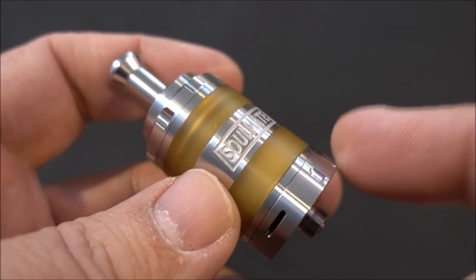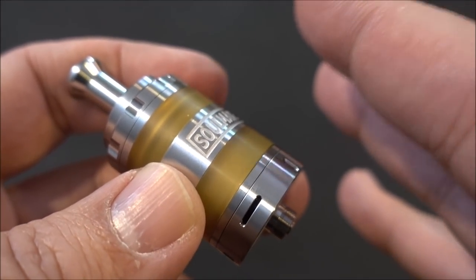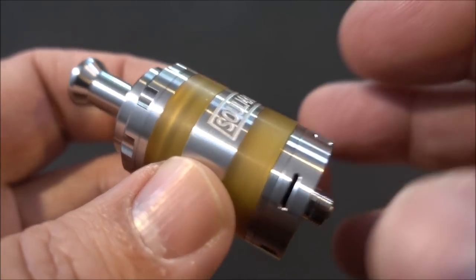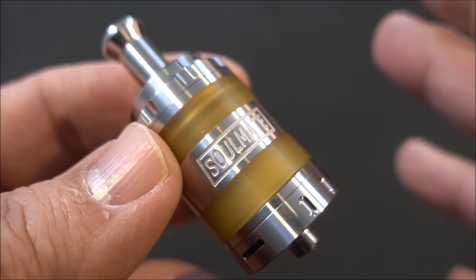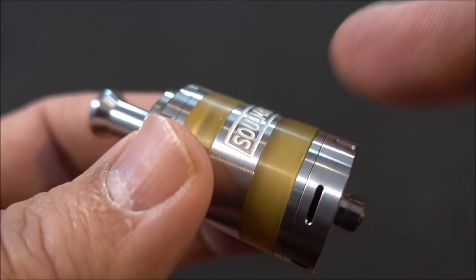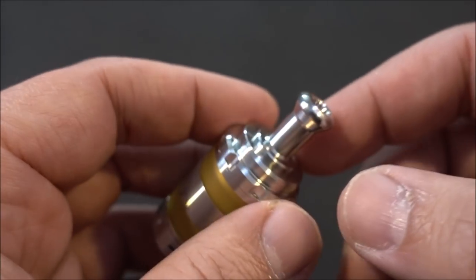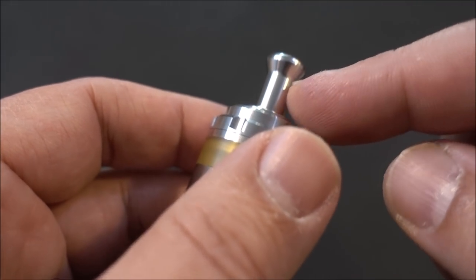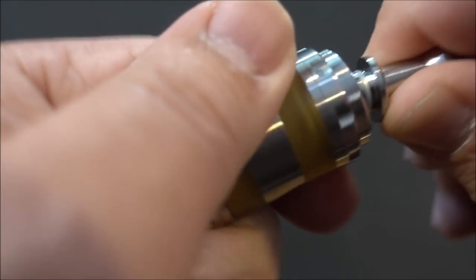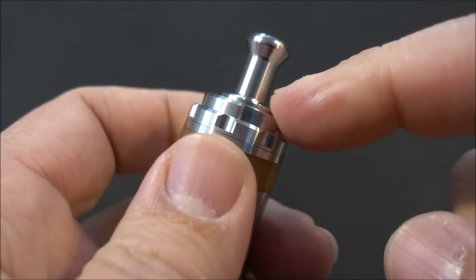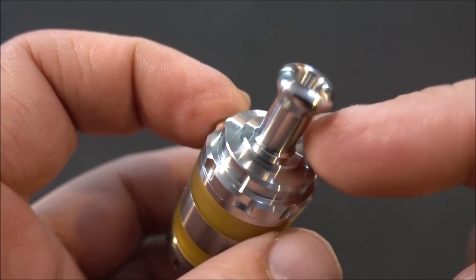So the Soulmate RTA is a 24 millimeter RTA, holds either two ml of e-liquid or four ml of e-liquid. Right now it's got an adapter on the inside to make it a two ml capacity, which I don't get - you really don't need it anymore with the laws that have changed. We have 510 drip tip on there, one of those old school looking drip tips, and the opening for your drip tips is on the tight side. It's a stainless steel drip tip - I'm not too crazy about the drip tip.